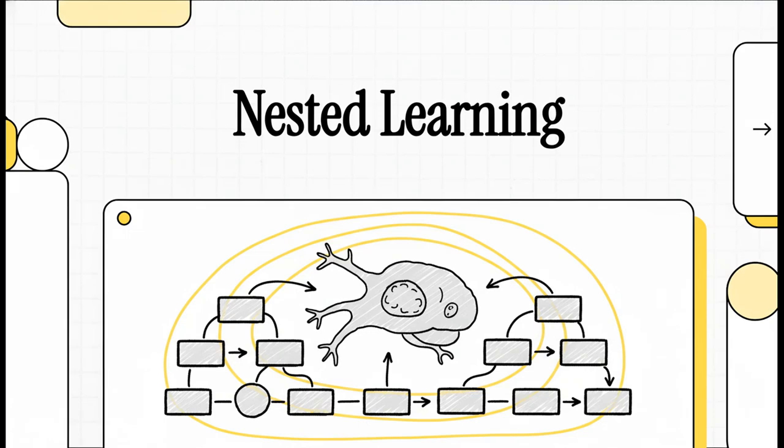So, there's this incredible new paper out, and it's proposing a pretty fundamental shift in how we think about artificial intelligence. It's called nested learning, and it might just be the key to unlocking what AI can really do. Let's dive in.